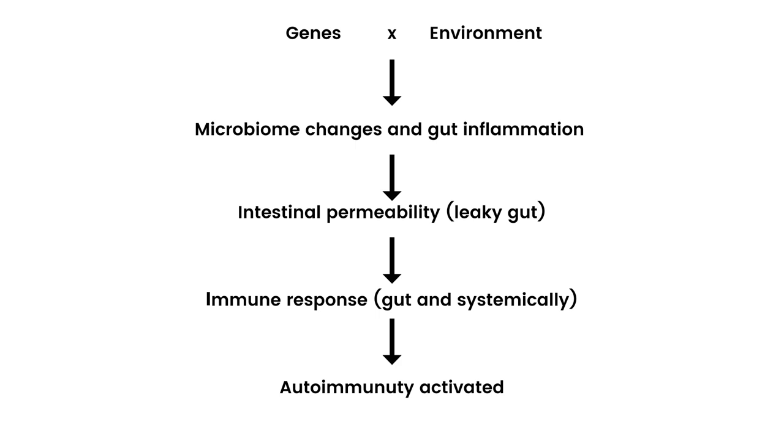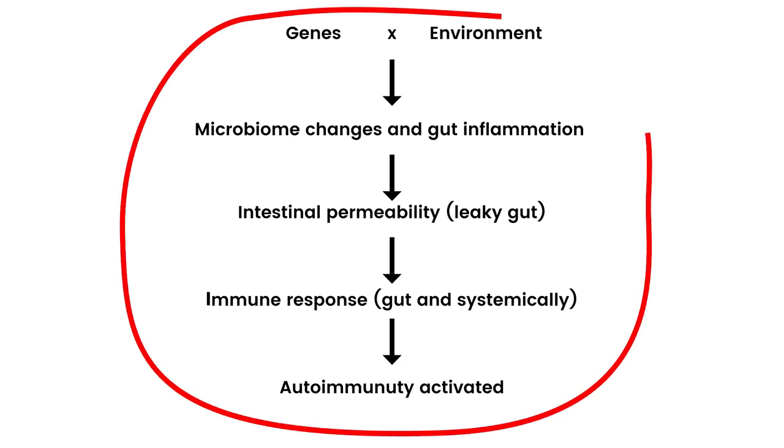As you can see, there are many steps along the way that eventually lead to autoimmunity. So it does not depend on your genes only. Just because a family member has an autoimmune condition does not mean you will develop it. That's why prevention is really important, and that's where the lifestyle changes I'm going to talk about next come in.